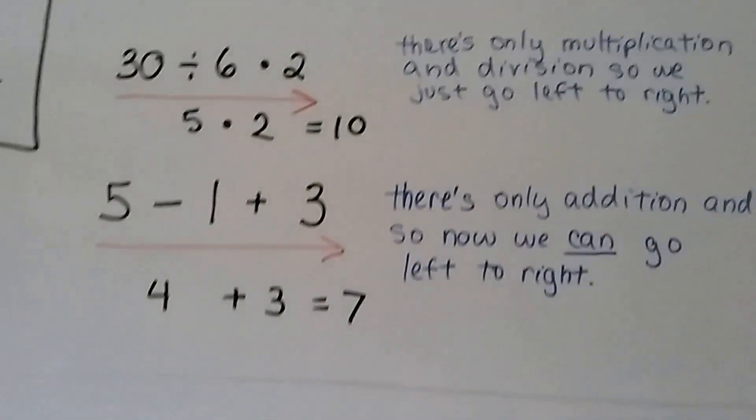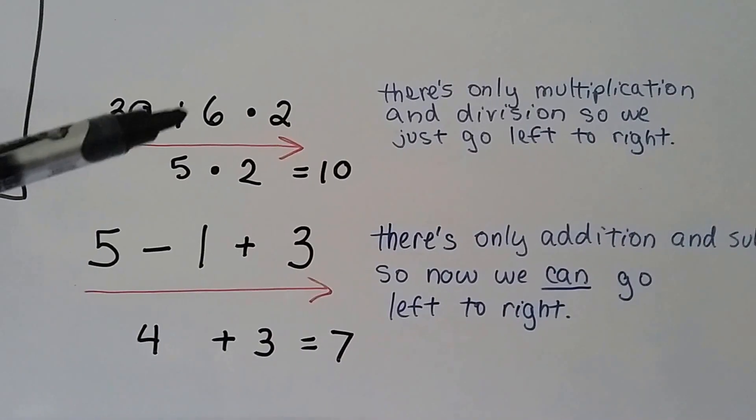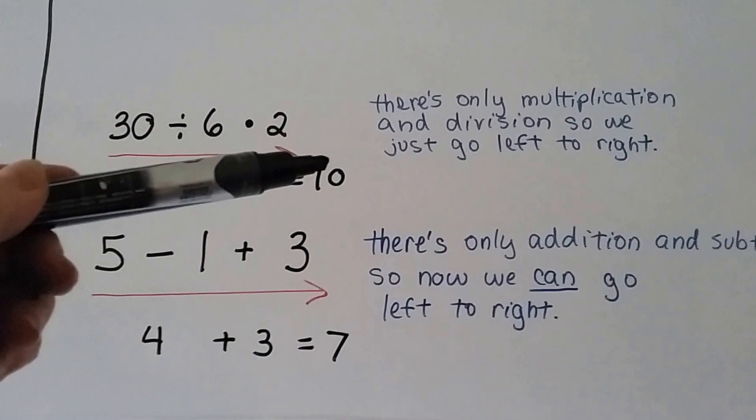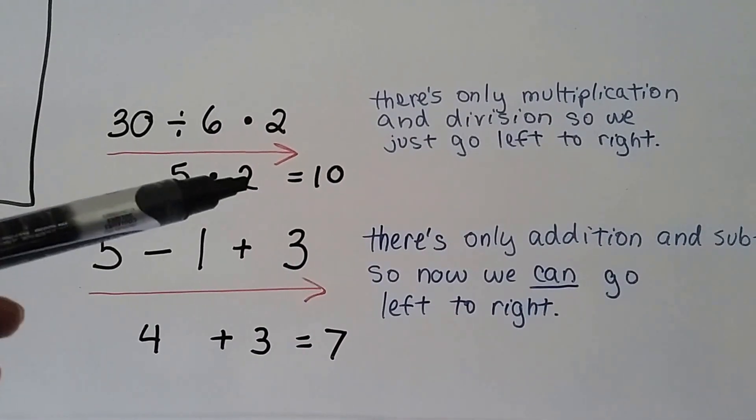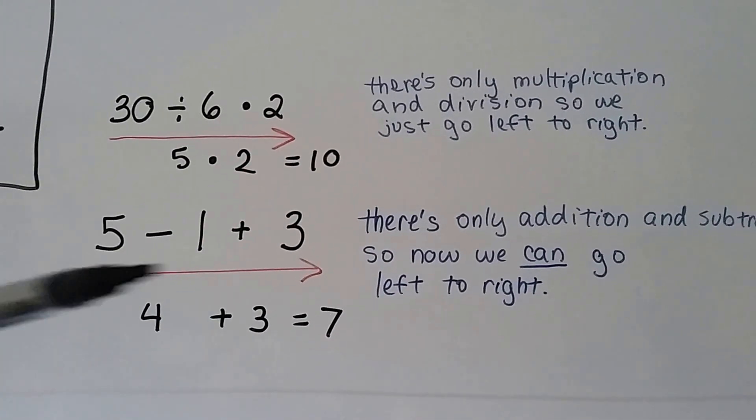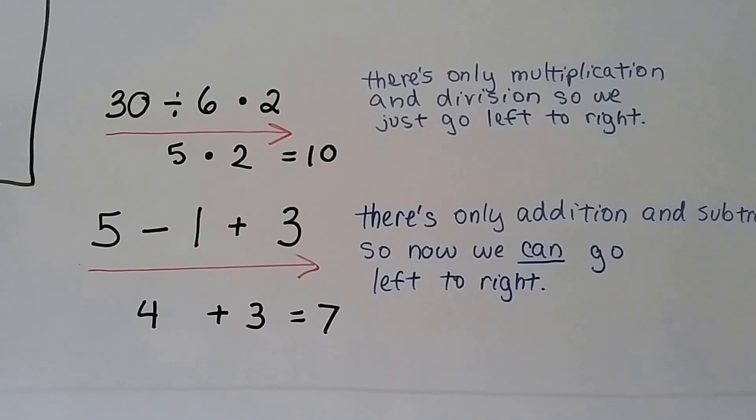Now, when there's only step 3 in your expression, divide and multiply or multiply and divide, we just go left to right. It's only step 3. So we have 5 times 2, which is 10. And if there's only step 4 in your expression, we just go left to right. We have a 4 plus a 3 is a 7.